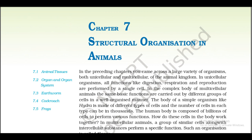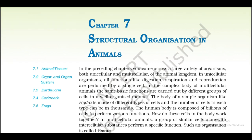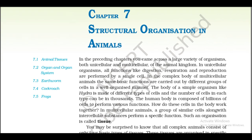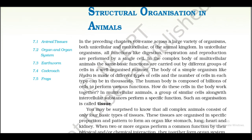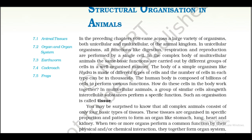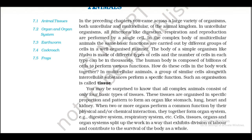In the preceding chapters you came across a large variety of organisms, both unicellular and multicellular, of the animal kingdom. In unicellular organisms, all functions like digestion, respiration, and reproduction are performed by a single cell. In the complex body of multicellular animals, the same basic functions are carried out by different groups of cells in a well-organized manner. The body of simple organisms like Hydra is made up of different types of cells.